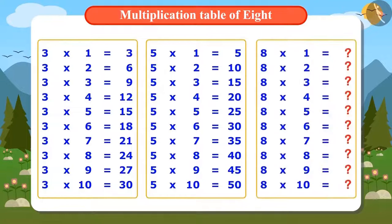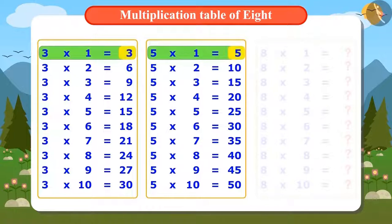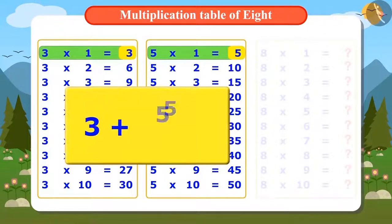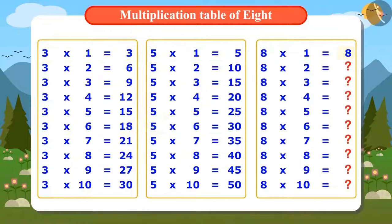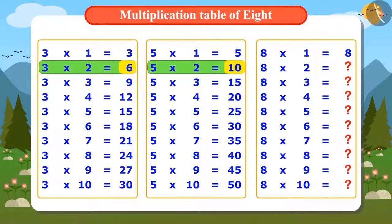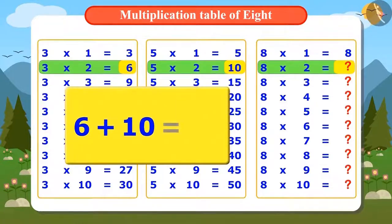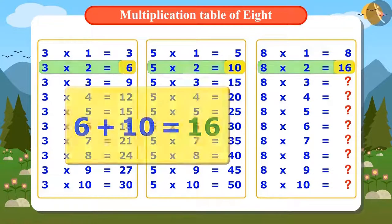I can find the table of 8 with the help of the multiplication tables of 3 and 5. When we add the first number of the multiplication tables of 3 and 5, we get the first multiple of 8. We can find the second number of the table of 8 by adding the second number of the table of 3, which is 6, and the second number of the table of 5, which is 10. When we add 6 and 10, we get 16 — that means 2 times 8 is 16.